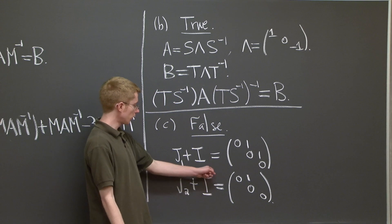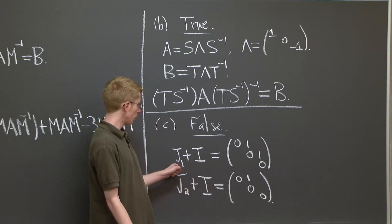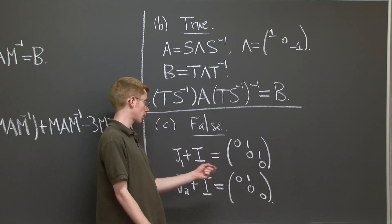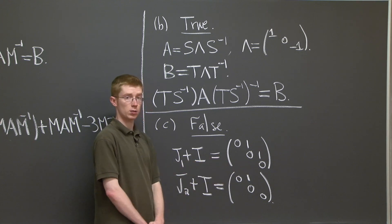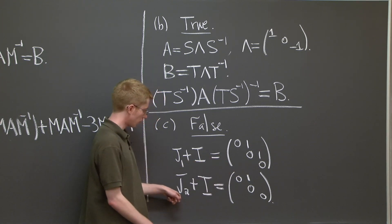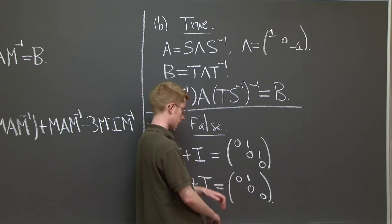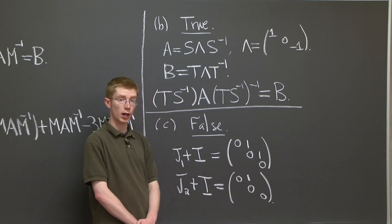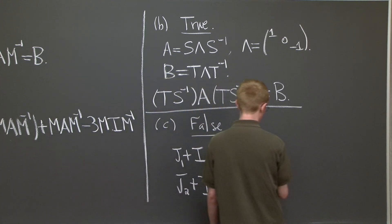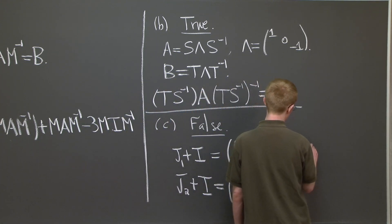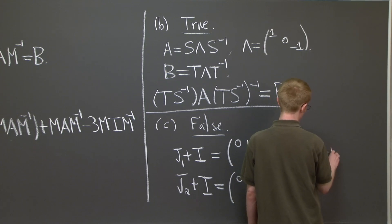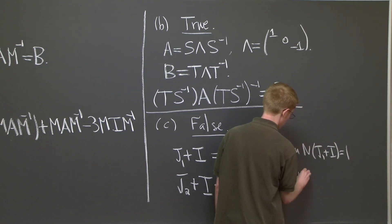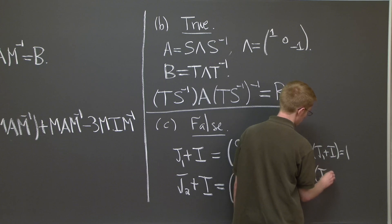So the point is that the null space of this matrix is just one dimensional. So there's only one independent eigenvector of J1 with eigenvalue minus one. Whereas the null space of this matrix is two dimensional. There are two independent eigenvectors with eigenvalue minus one. So the dimension of the null space of J1 plus the identity, this is one and this is two. So they cannot possibly be similar.